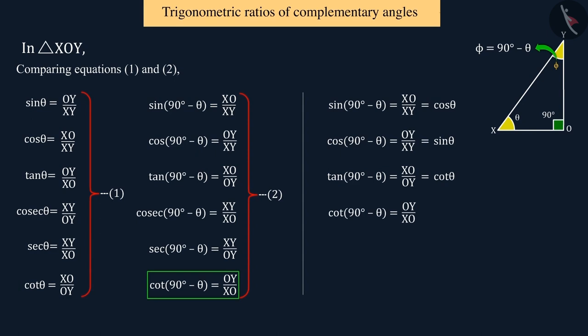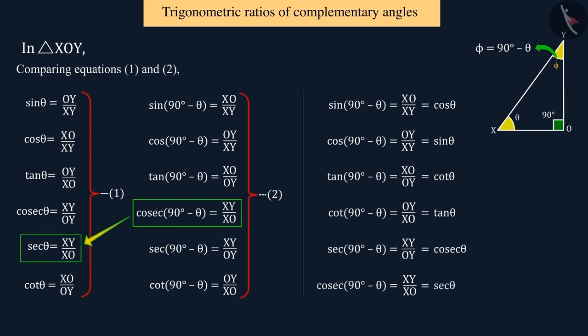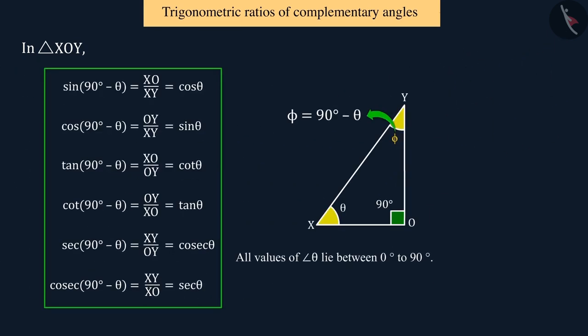Cot 90 degrees minus theta is equal to tan theta. Sec 90 degrees minus theta is equal to cosec theta. And the value of cosec 90 degrees minus theta is equal to the value of sec theta. Where all values of the angle theta lie between 0 degrees to 90 degrees.